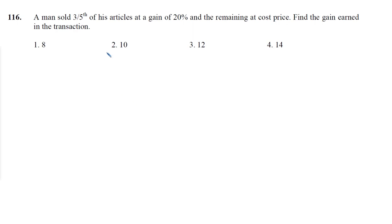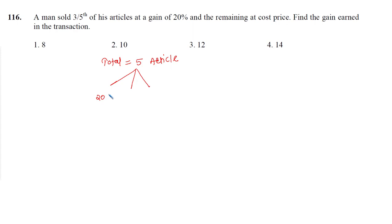Let's have a look at it. You can assume that the total number of articles are 5. 3/5 means the first 3 articles — on each of these first 3 articles he earned 20% profit. And the remaining two articles he sold at 0% profit.